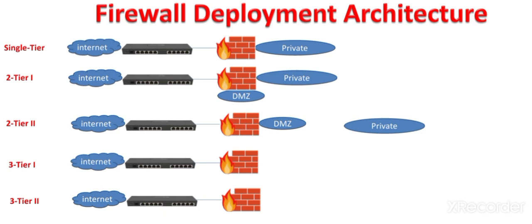In two-tier two architecture, we again have two networks — the DMZ and the private network — but in this case the DMZ is physically ahead of the private network by deploying an additional firewall. In two-tier one architecture, the DMZ was logically providing protection to the private network, but in two-tier two architecture we have deployed a physical firewall device. There are less strict rules on the firewall deployed between the router and the DMZ, and more strict rules on the firewall deployed between the DMZ and the private network.